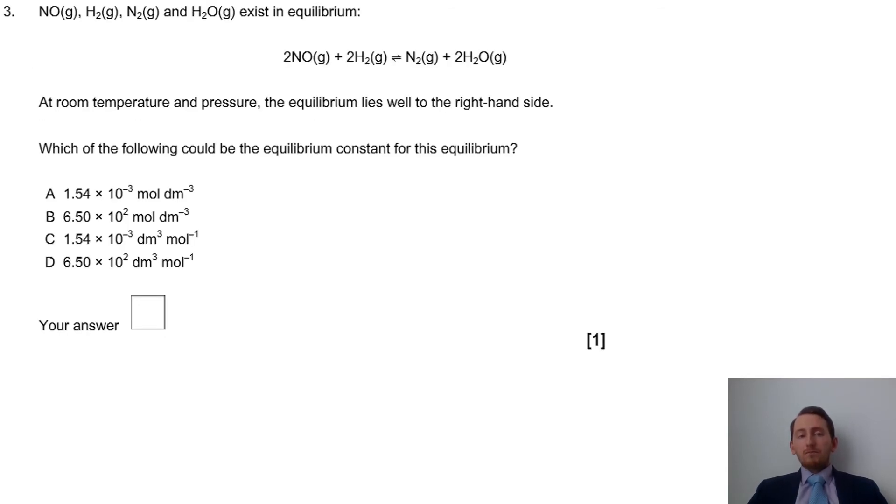And final question here, we're asked what the equilibrium constant would be for the situation we have above that equation there. Now, we haven't been given any values, so we can't actually calculate it, but we don't need to. If we look at A through D, our answers, we then see, okay, we've got the same answer twice, but then the units are different. So A and C and B and D.